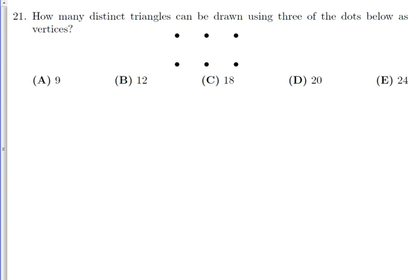One way to solve it is to go through and essentially count all the triangles. Probably the best way to do that is to do it in an organized way where you start with this one and think about how many triangles can I create that include that point?